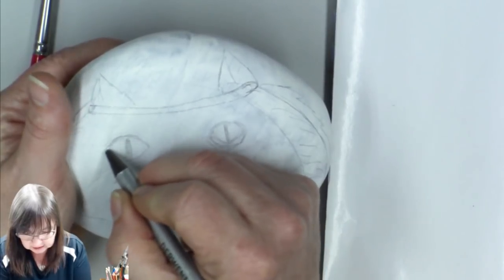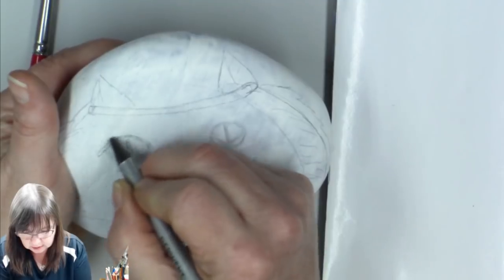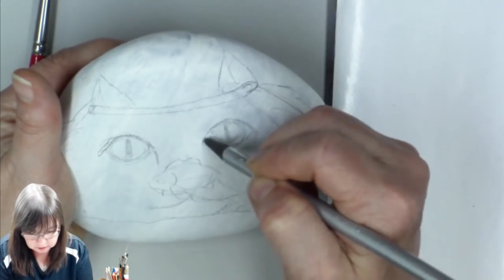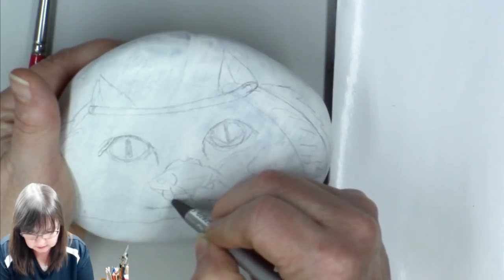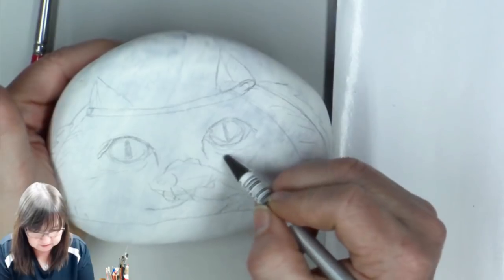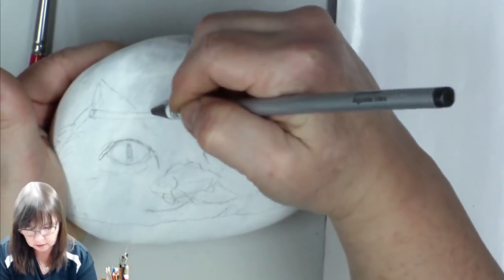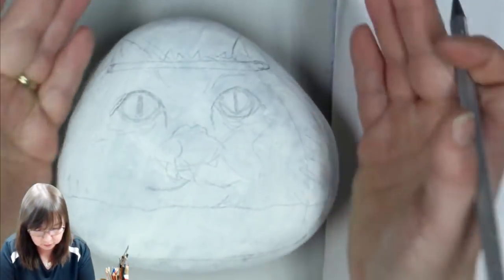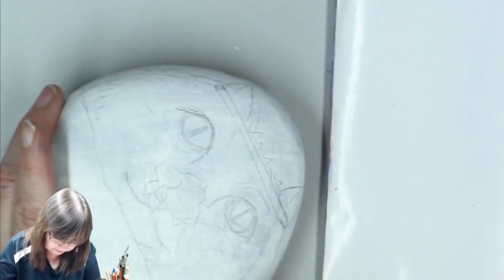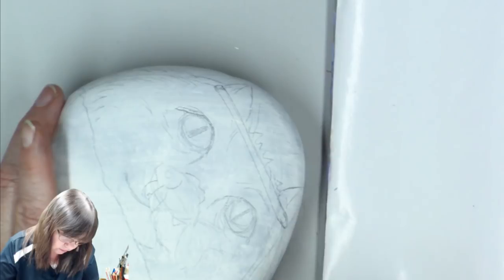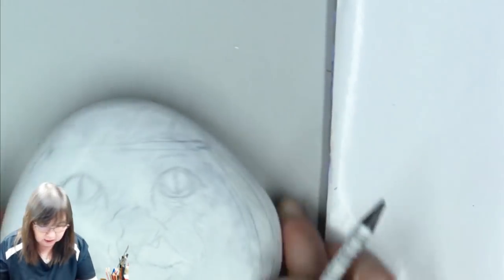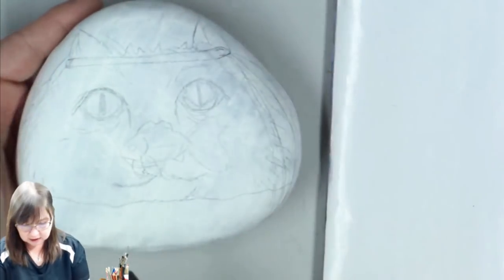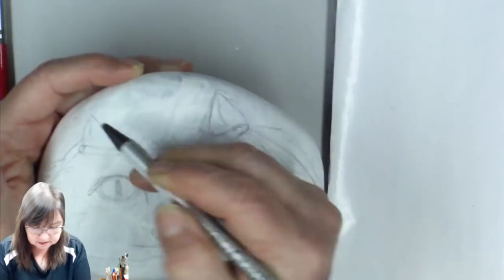The nice thing about this pencil is that it is water soluble. Just get a few little lines on here. He's going to be cute. I don't want to go all the way out. Now this down here is all rocks. So let's get started painting this and see what happens.